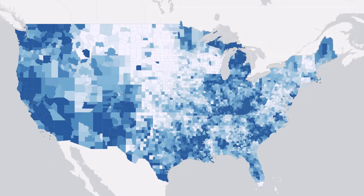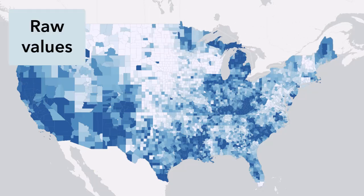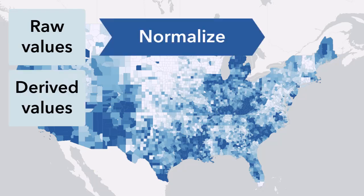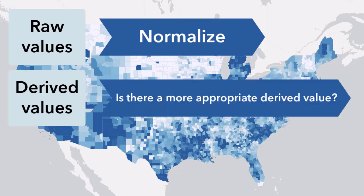So, if you're making a choropleth map, how do you know if you need to normalize your data? If your data are raw values — counts or totals — then yes, you need to normalize them. If you have derived values like a percentage, average, rate, or ratio, then you don't, although you should still consider if there is a more appropriate derived value for your particular map. You still have to ask if your map allows for meaningful comparisons.